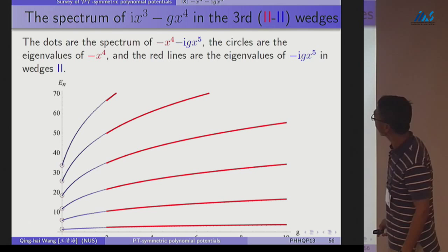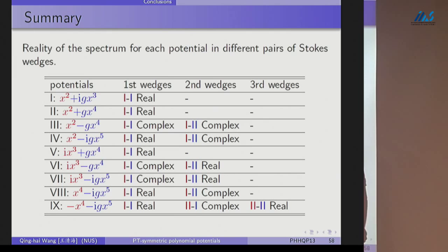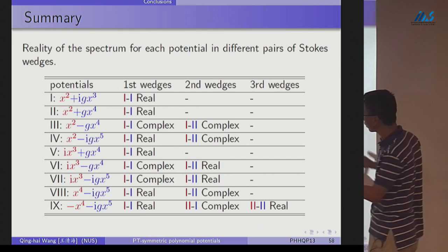That's the survey. What pattern we can find? Here is the table I have shown you. For the nine different potentials, they have, some of them have two pairs of wedges, some even have, the last one have three pairs of wedges. Some of them are real, some of them are complex. What can we find from this?